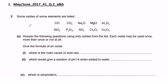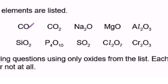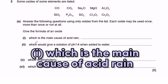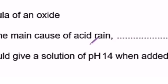Question 2A and B: some oxides of elements are listed. We have carbon monoxide, carbon dioxide, sodium oxide, magnesium oxide, aluminium oxide, and others. Answer the following questions using only oxides from the list — each oxide may be used once, more than once, or not at all. Give the formula of an oxide for the following.